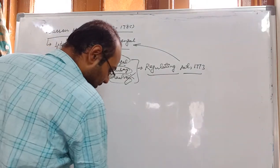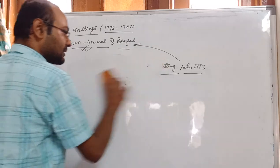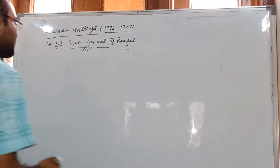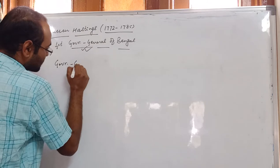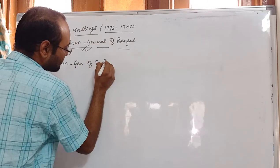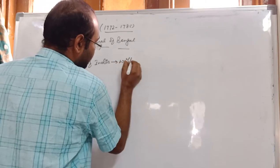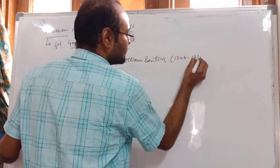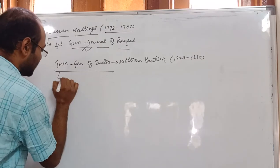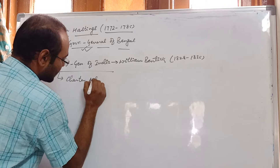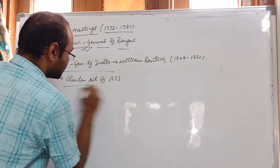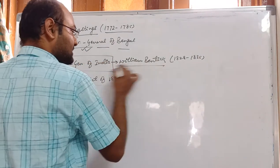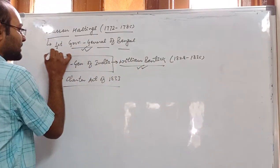You should also not confuse Governor General of Bengal with Governor General of India in the prelims. The first Governor General of India was William Bentick, from 1828 to 1835 — a provision made under the Charter Act of 1833. So: the first Governor General of India was William Bentick, and the first Governor General of Bengal was Warren Hastings.